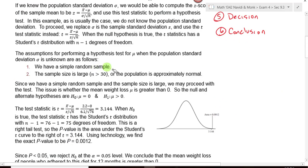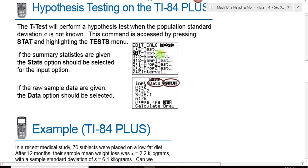We have the same two assumptions. We have to have a simple random sample and either your sample size is large or the population is approximately normal. One of those two things has to happen. That is an either or. On your calculator, the t-test is right underneath the z-test. You have a choice of either using raw data or summary statistics.